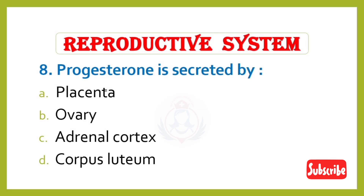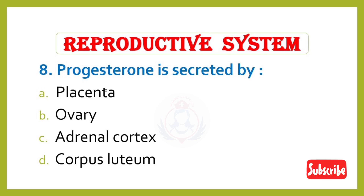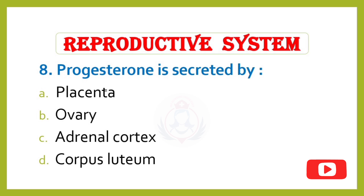Question 8. Progesterone is secreted by: Option A – Placenta, Option B – Ovary, Option C – Adrenal cortex, Option D – Corpus luteum. Correct answer is Option D: Corpus luteum.